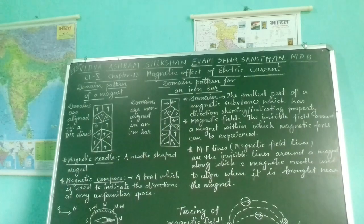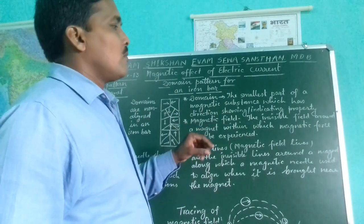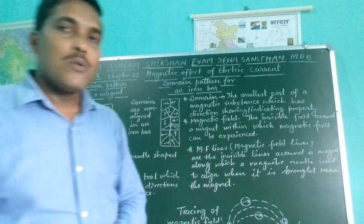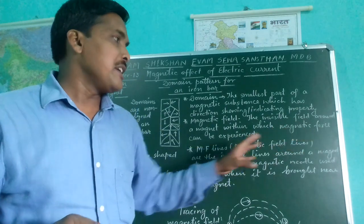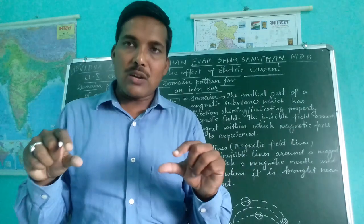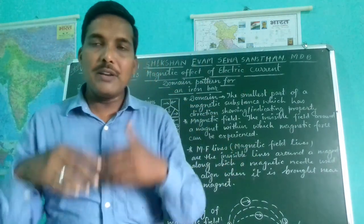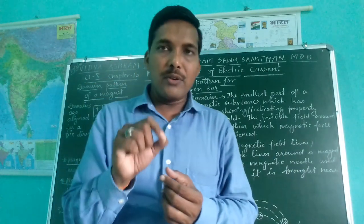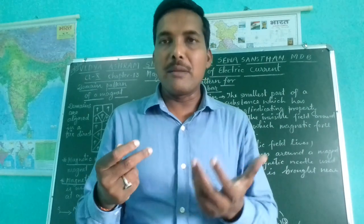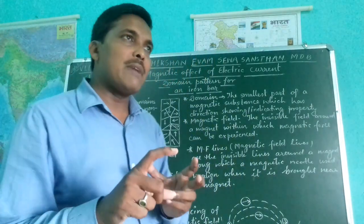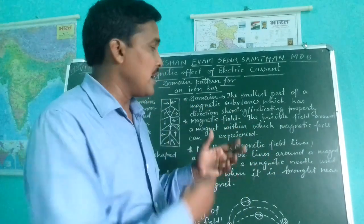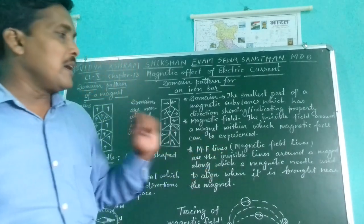Next, magnetic field. What is magnetic field? The invisible field around a magnet within which magnetic force can be experienced. This means that the magnetic field is an invisible area where we can experience the effect of magnetic force.